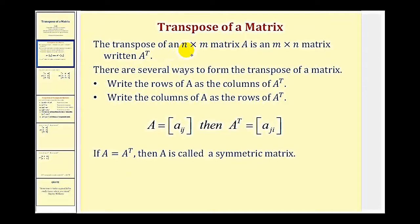The transpose of an n by m matrix A is an m by n matrix, written using this notation here, where we have A with a superscript of capital T, and we say 'the transpose of matrix A.' Notice how if the dimensions of matrix A are n by m, the transpose matrix will have the dimensions m by n.